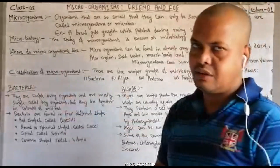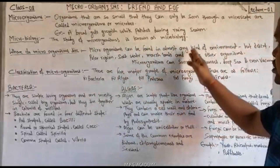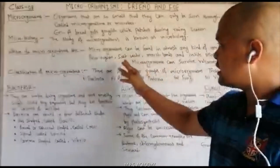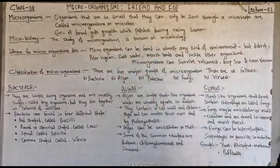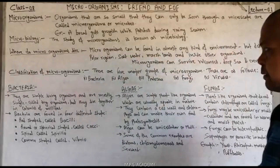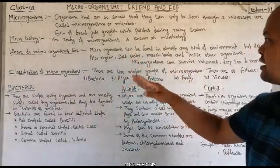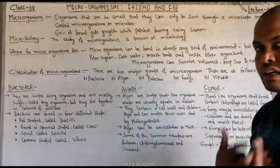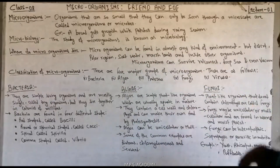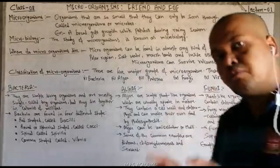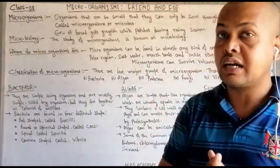Where do micro-organisms live? Micro-organisms kahan paye jaate hain? Micro-organisms can be found in almost any kind of environment: hot desert, polar desert, salt water, marshland, and inside other organisms. Micro-organisms sabhi prakar ke environment mein paye jaate hain. Iske alawa bhi, volcano mein, deep sea mein, even vacuum mein bhi micro-organisms paye jaate hain. Is tarah se aap jaan gaye ki micro-organisms kahan-kahan jagah paye jaate hain, yaani almost sabhi jagah.